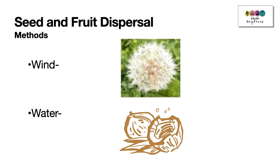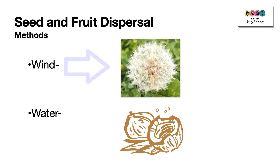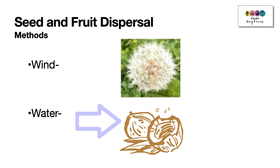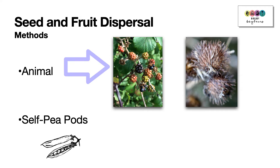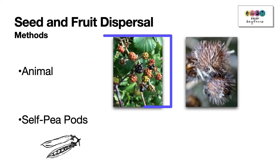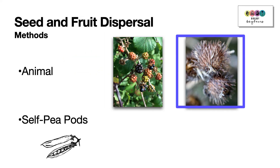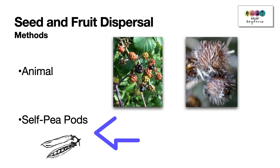There are four ways in which seeds and fruits can be dispersed. Wind — for example, dandelions. Water — for example, the coconut. Animals — they can eat the fruit and excrete the seed; some seeds like burdocks have special adaptations to cling to animal fur. And self-dispersal — some plants like peapods will explode to disperse their seeds.